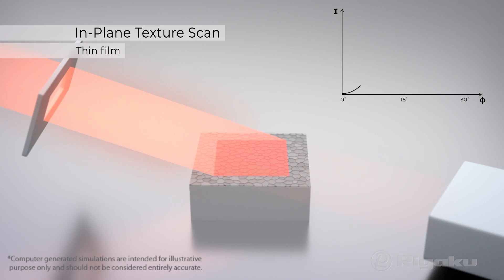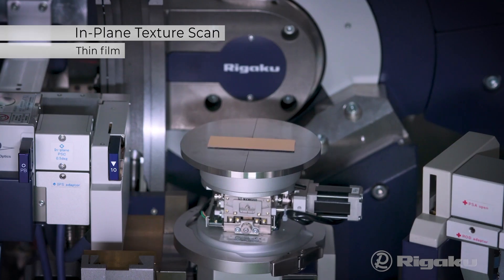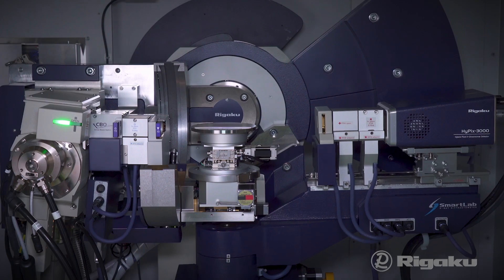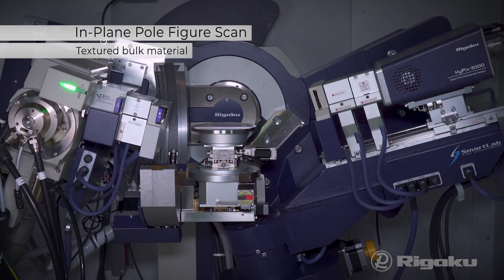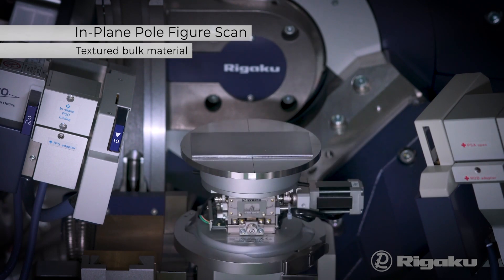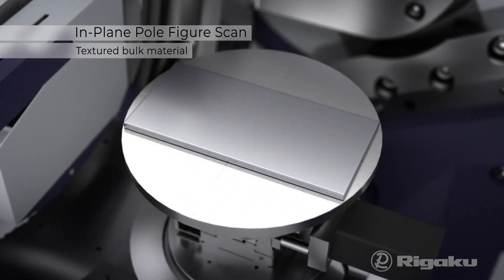Analyze surface texture without remounting the sample in a vertical position by coupling in-plane axis with standard horizontal rotation stage. Combine in-plane and vertical scanning axes to measure the complete structure of bulk materials including surface texture.